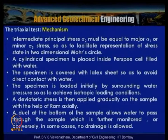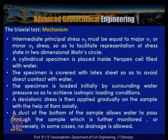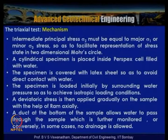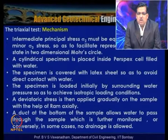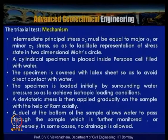The cylindrical specimen is placed inside a perspex cell filled with water and covered with a latex sheet to avoid direct contact. The specimen is initially loaded by cell pressure; if consolidation is required, it is allowed to occur at this stage. Once consolidation is complete, a deviator stress is applied gradually using a RAM. A duct at the bottom allows water to pass, and a pore water pressure transducer measures positive or negative pore pressures depending on the stress history of the soil.